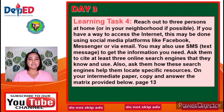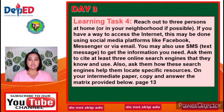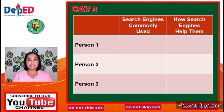Day 3 Learning Task 4: Reach out to 3 persons at home or in your neighborhood. If you have access to the internet, this may be done using social media platforms like Facebook, Messenger, or via email. You may also use SMS or text message. Ask them to cite at least 3 online search engines that they know and use, and ask how these search engines help them locate specific resources. Copy and answer the matrix provided on page 13.